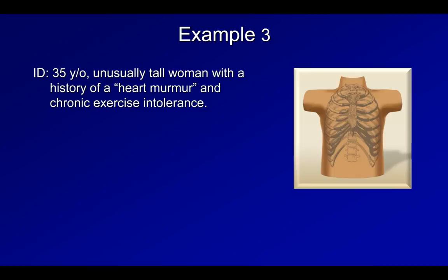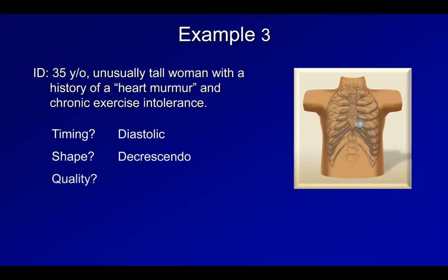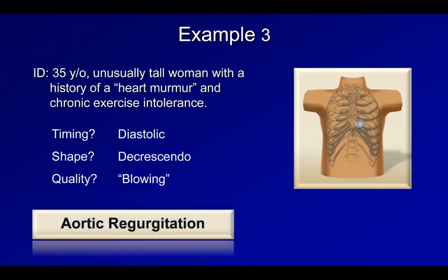For example three, we have a 35-year-old woman who reports a history of a heart murmur and chronic exercise intolerance. This is best heard at the fourth left intercostal space. Listen for the timing, the shape, and the quality. [audio clip] Hopefully the timing for this murmur sounds different than the previous two examples — that's because this is a diastolic murmur. Its shape is decrescendo, and its quality? Many people would agree that it sounds blowing in nature. [audio clip] Final diagnosis: aortic regurgitation.